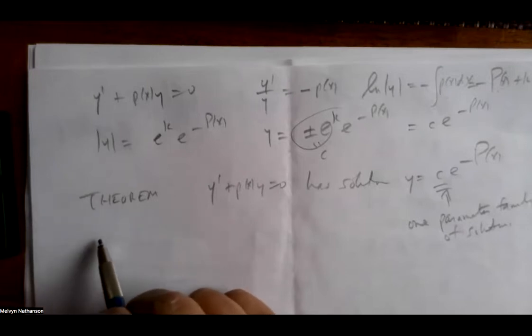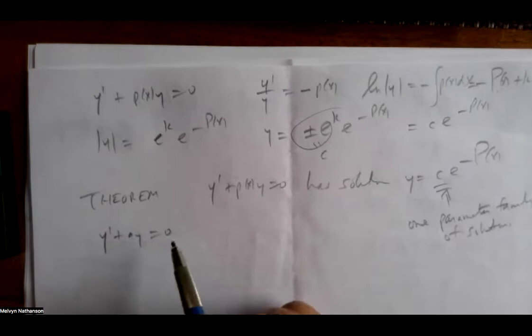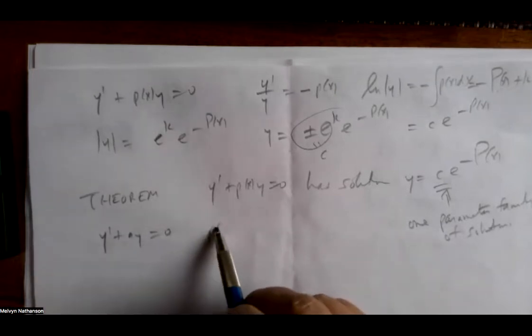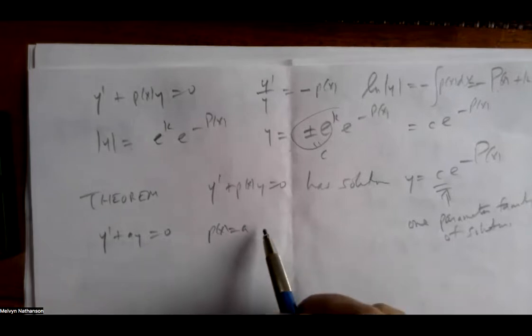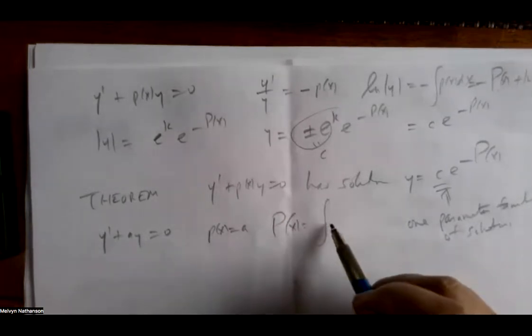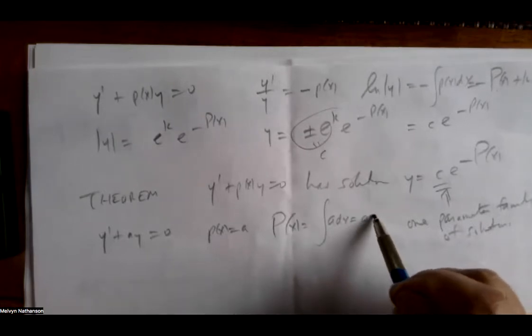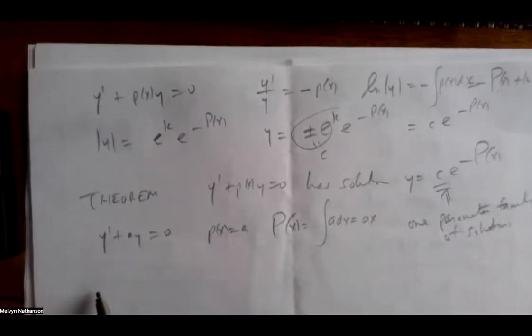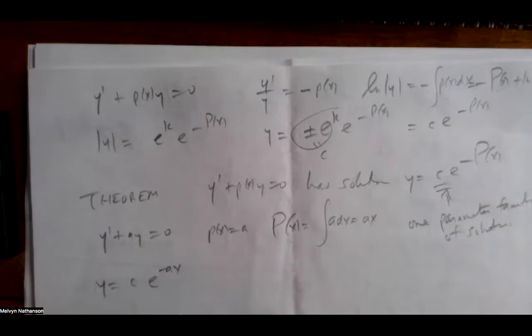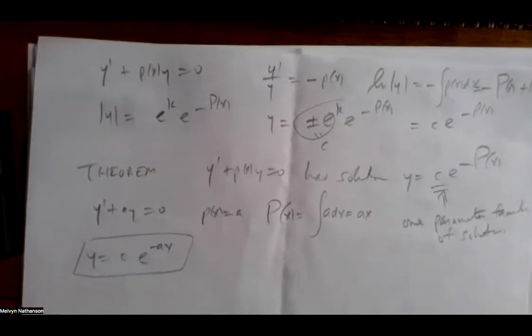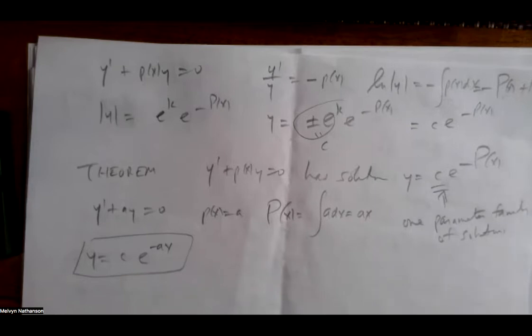Let's take the simplest example. If a is just a number and we have y prime plus a y equals zero, then p(x) equals a, and capital P(x), the antiderivative of a, is just ax. So our solution is y equals c e to the minus ax for any c.